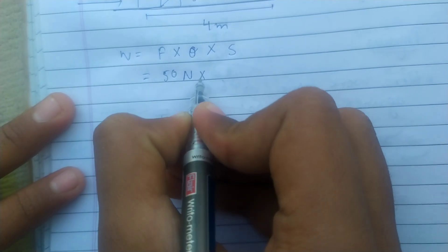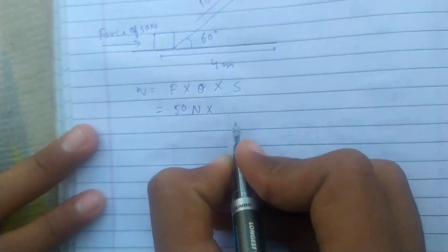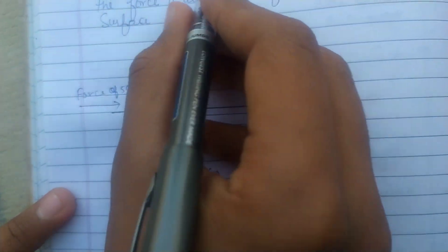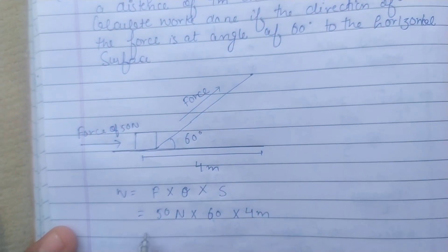The force is 50 Newton, and theta's value is 60. We'll use 60 into the displacement of 4 meters.